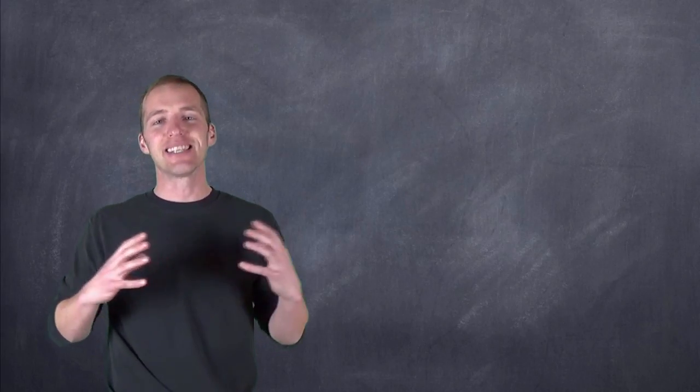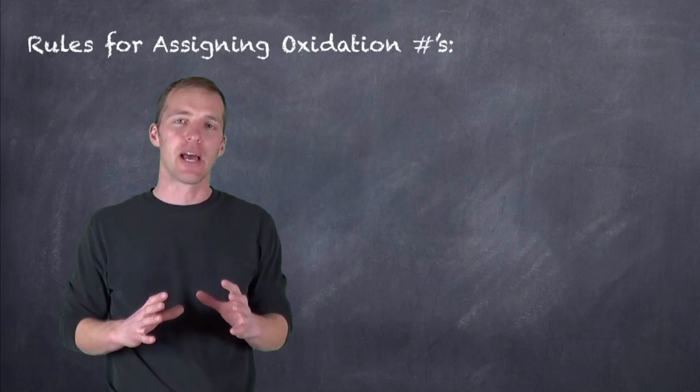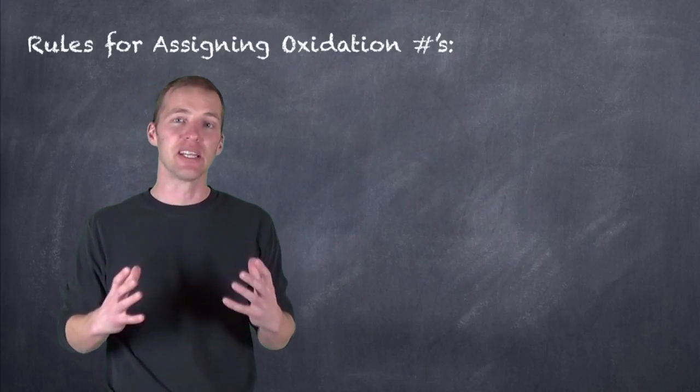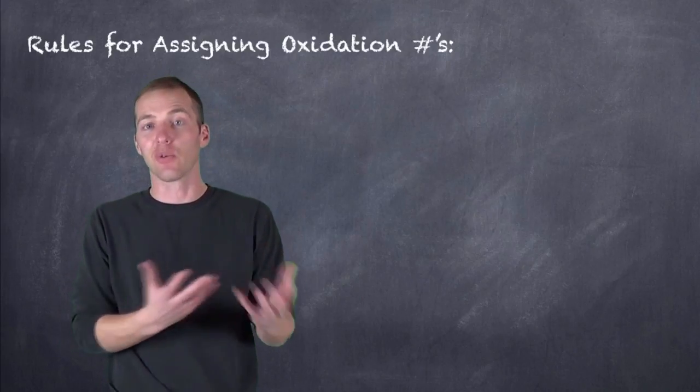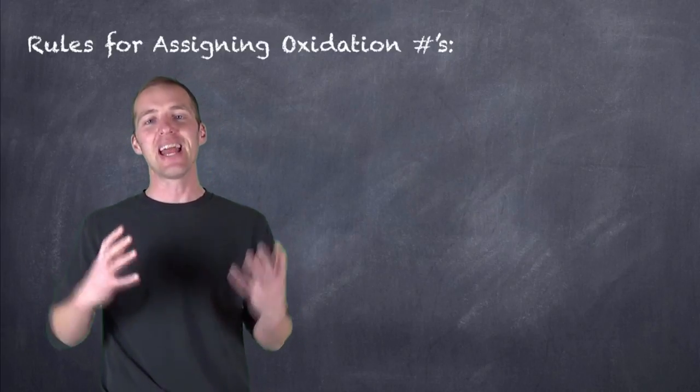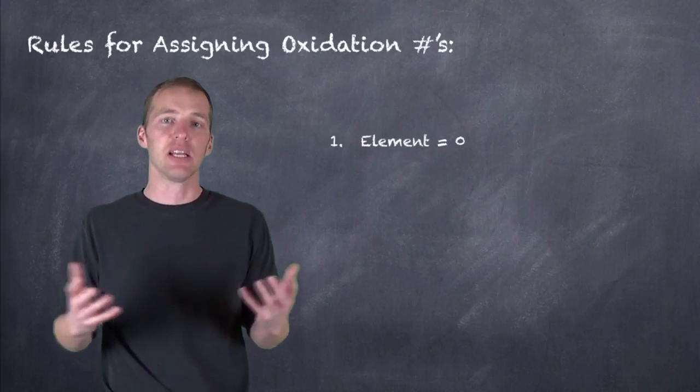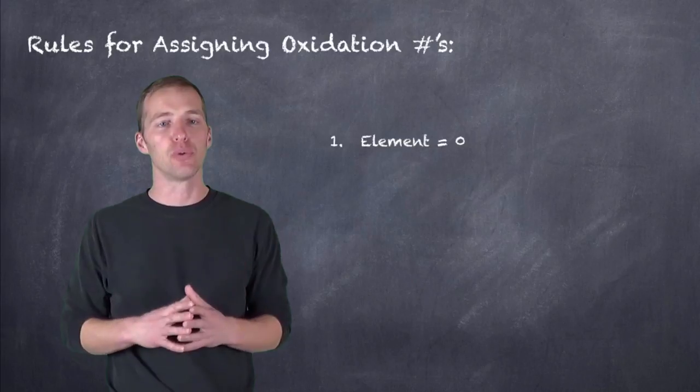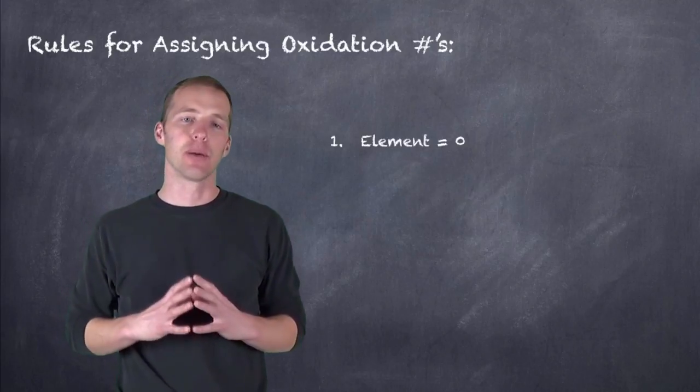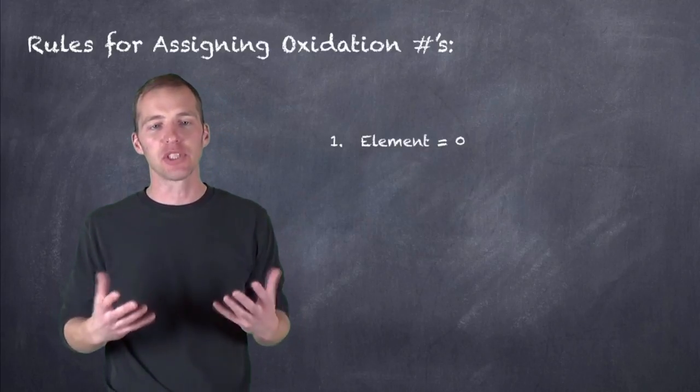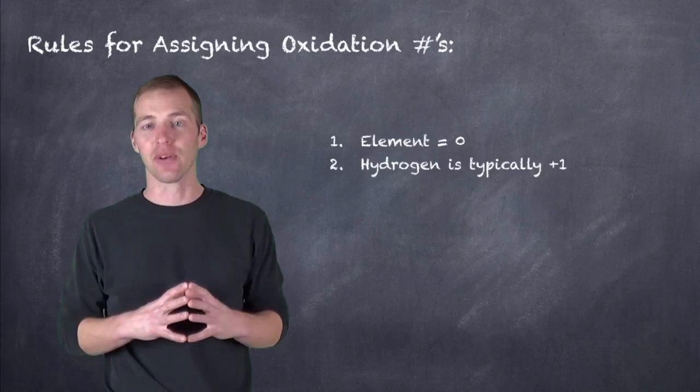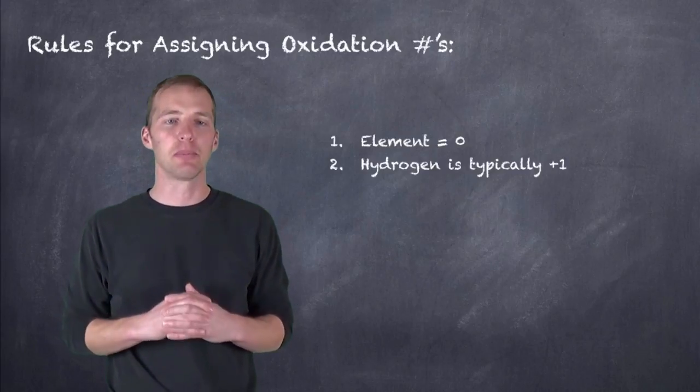Well, there is a set of rules for assigning oxidation numbers that doesn't necessitate us having to draw the Lewis structure every single time, figure out the difference in electronegativities, and start assigning which electrons are going to go and be assigned with which element. And so there are some rules that we're going to follow. And the first one is that any element, whether it be monatomic like helium or diatomic like oxygen gas or O2, that the element has an oxidation number of zero. So anything that's elemental, oxidation number of zero. The oxidation number of hydrogen is typically plus one, unless hydrogen is bonded to something that's less electronegative, which is rare, but typically hydrogen would be plus one.